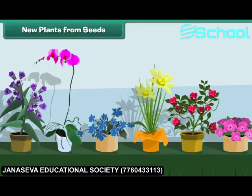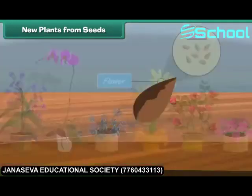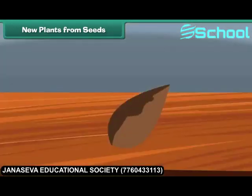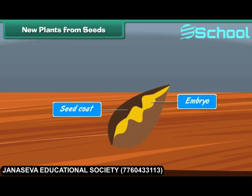New plants from seeds: Flowering plants produce seeds. Each seed produced by a plant has a baby plant inside it, called an embryo. The seed is surrounded by a tough covering called the seed coat, which protects the baby plant and prevents the drying up of the seed.